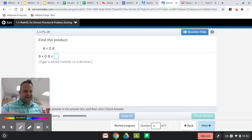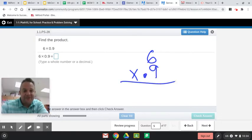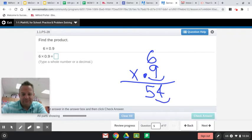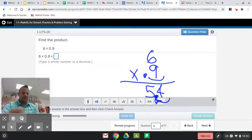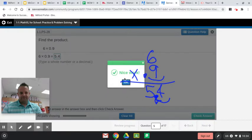Here we have 6 times 9 tenths. When you multiply, you do not have to line up your decimals. Actually, you just ignore the decimal to the very end. I'll show you what I mean. So 9 times 6 is 54. And then there's one place behind the decimal here. So we'll move one place over right there to get 5.4. 5.4 there. Let's see if that's right. Hooray.